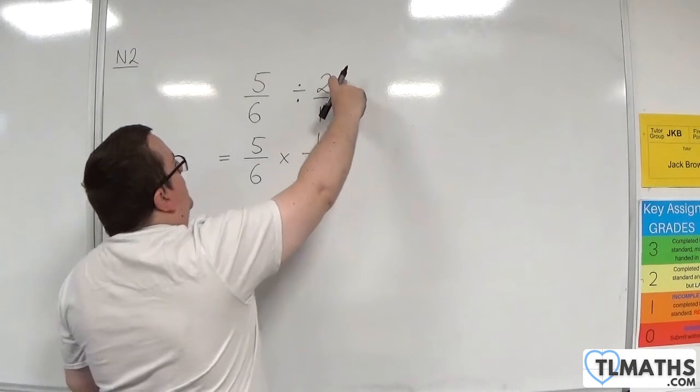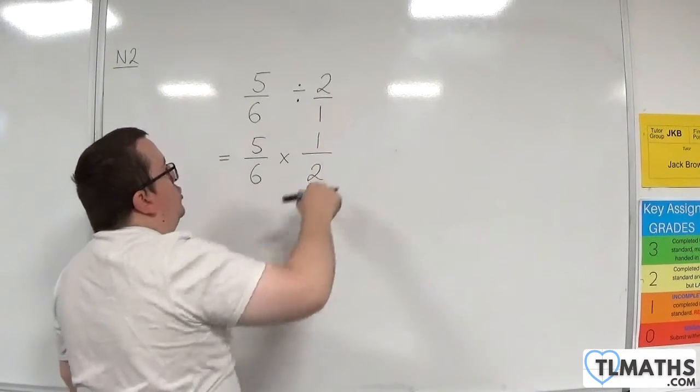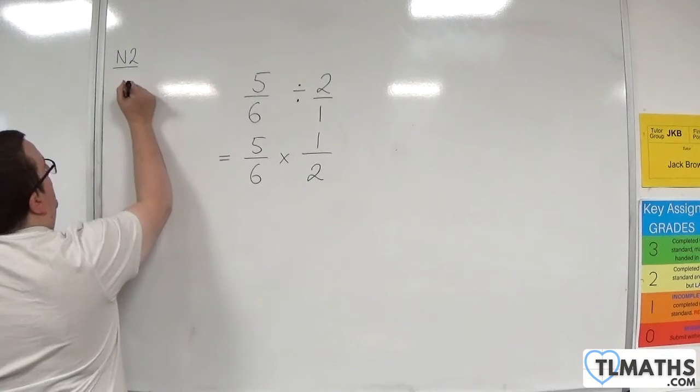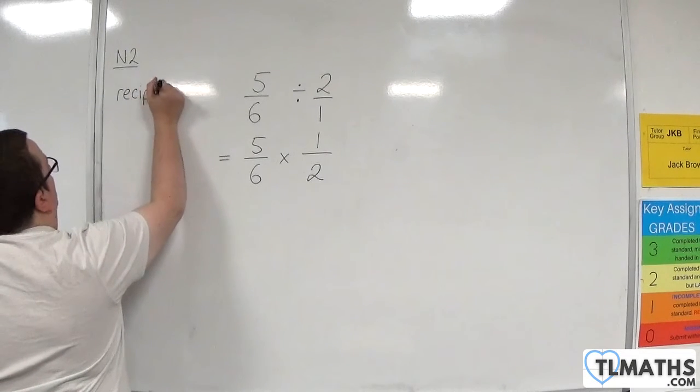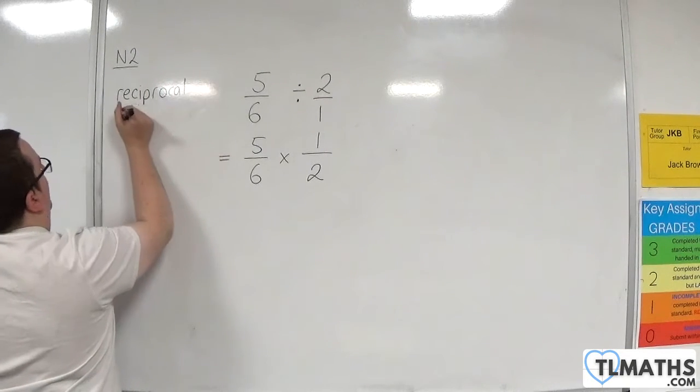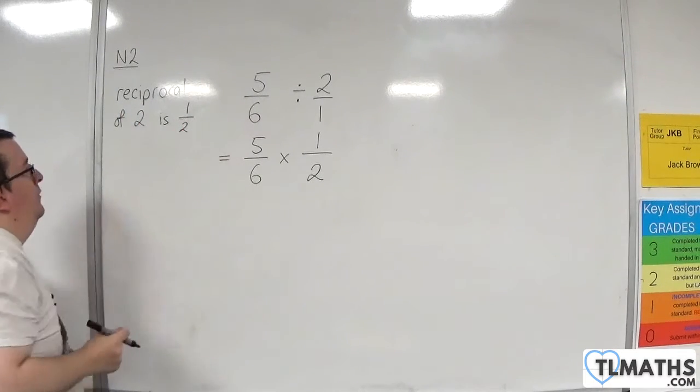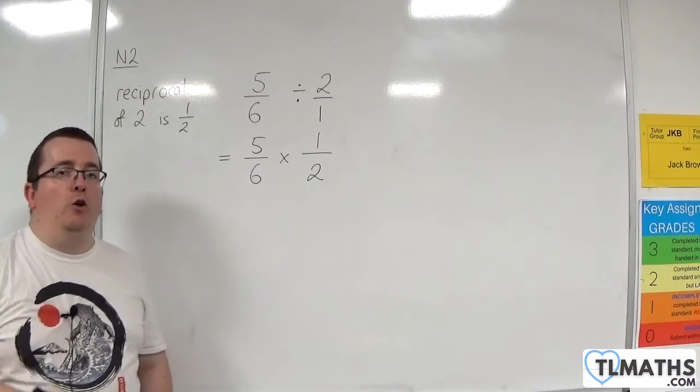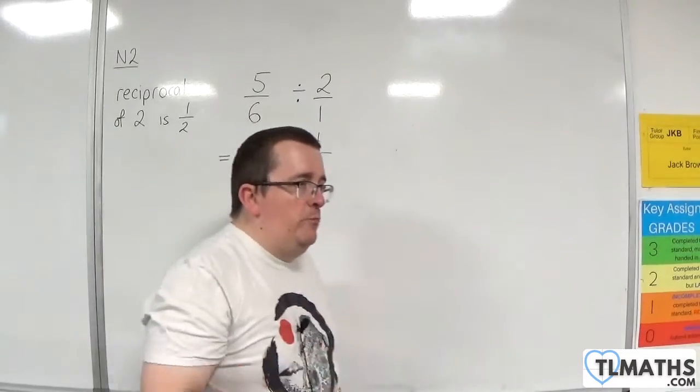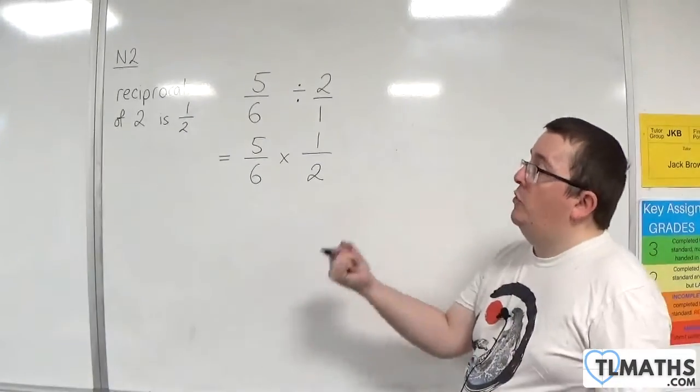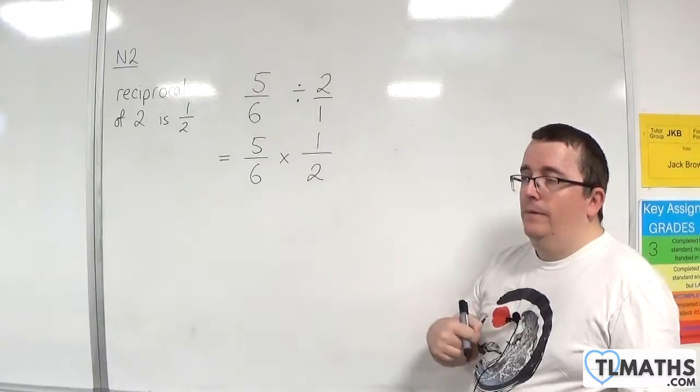Essentially, we are finding the reciprocal of 2, which is 1 over 2. The reciprocal of 3 is 1 over 3. The reciprocal of 1 over 3 is 3.